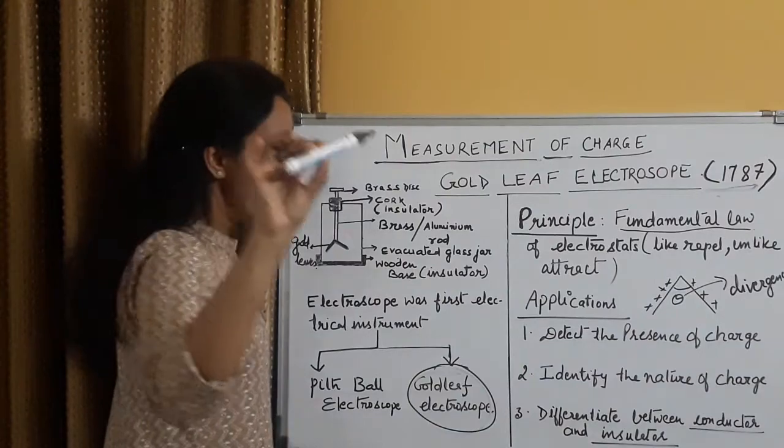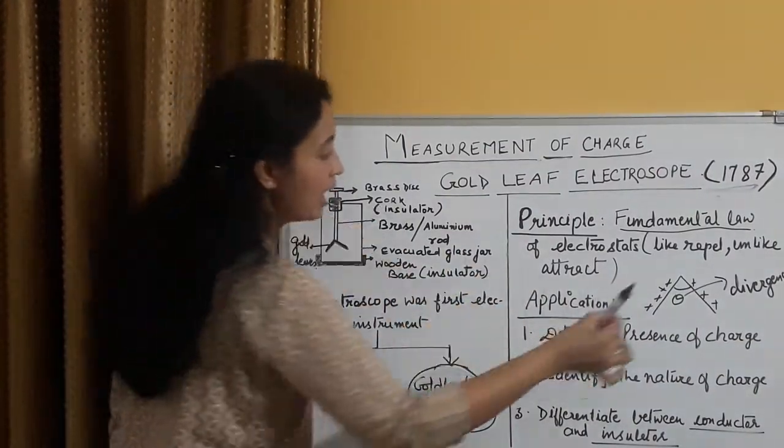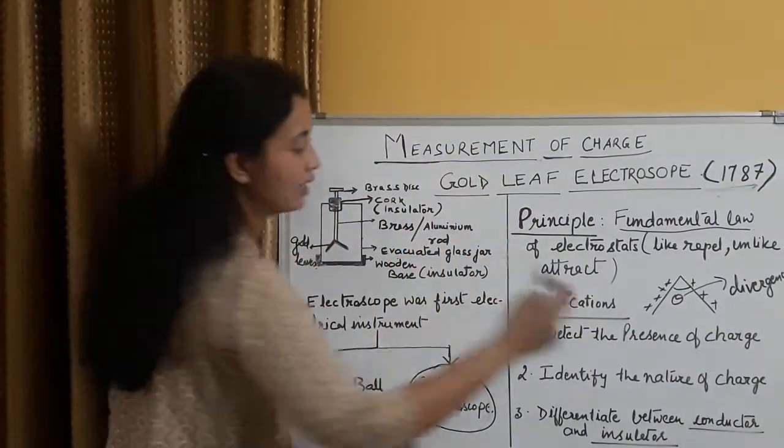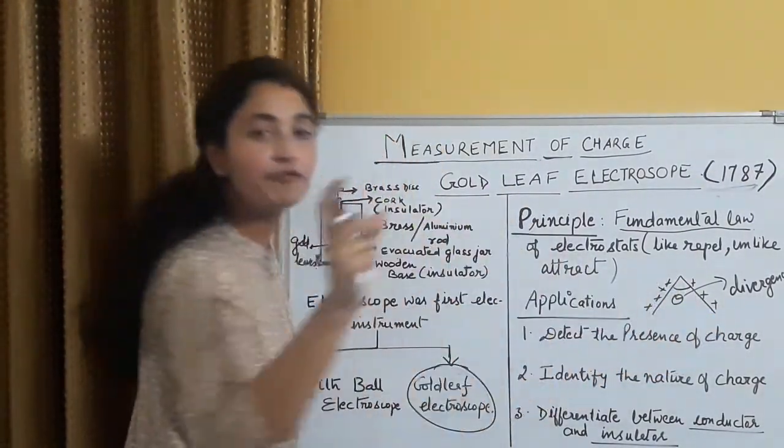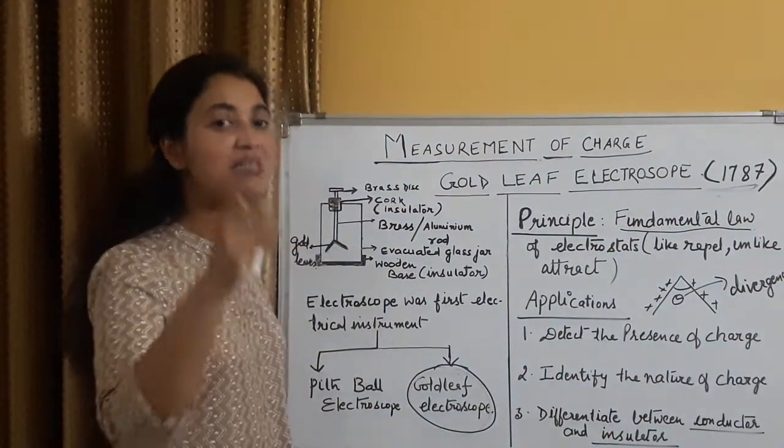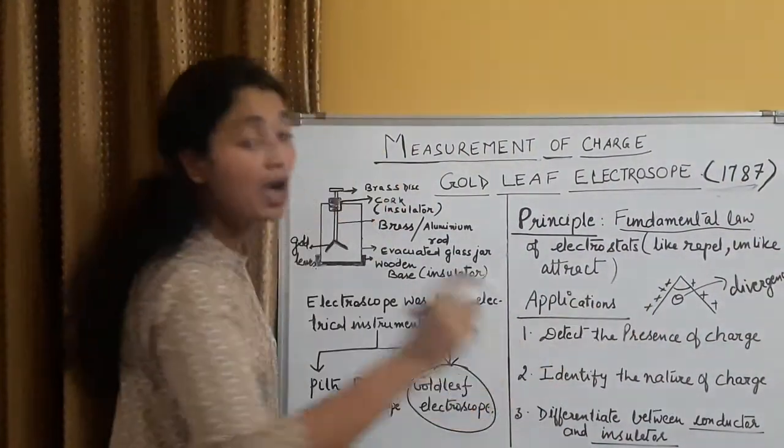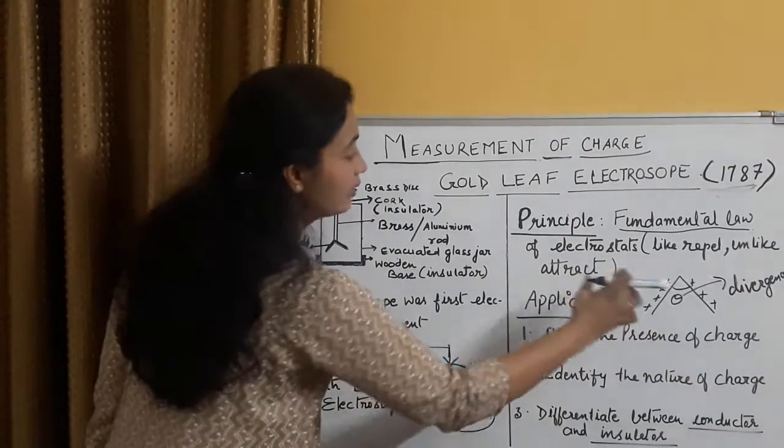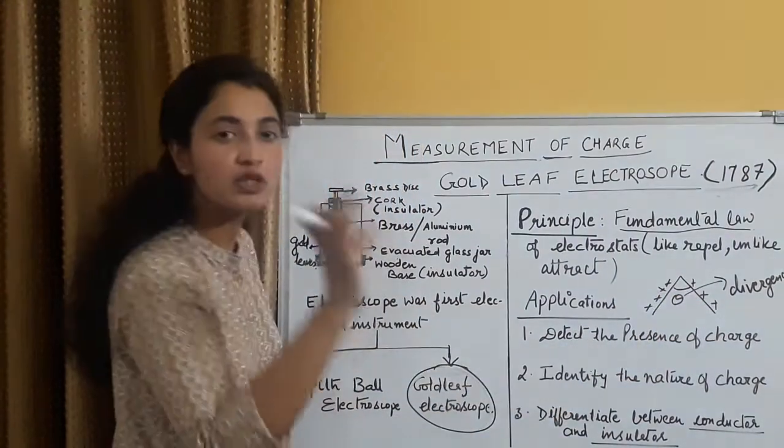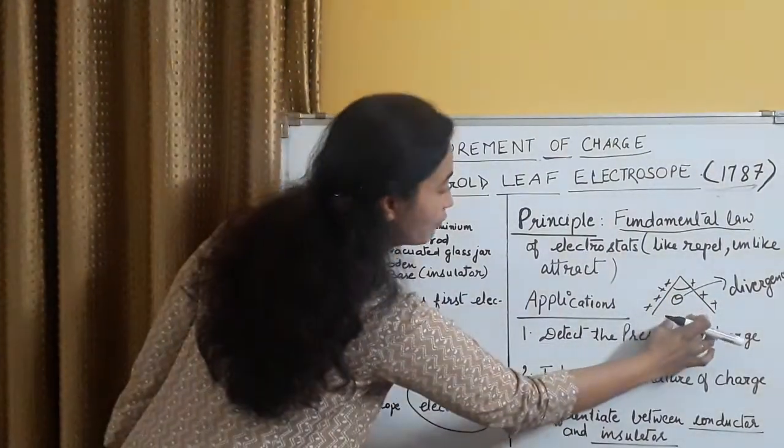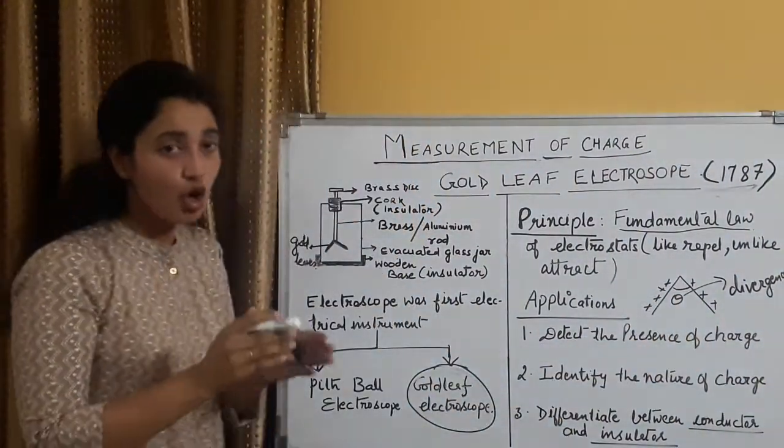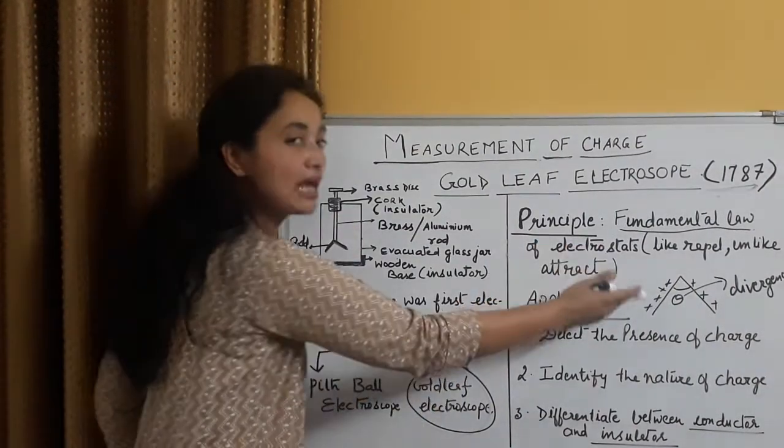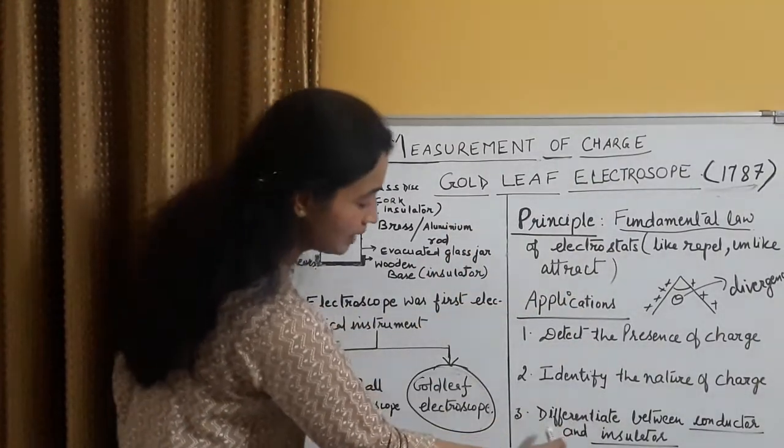Suppose, mera test rod hai, aur mujhe check karna hai ki, ispe positive hai, ya negative. Agar maine isko touch kiya, aur agar yeh rod positive hai, toh yeh divergence badhega. If divergence increases, that means the nature of charge is same as that of gold leaf. Aur agar suppose, mera rod negative hai, if it is negatively charged, then that negative charge will neutralize these positive charges, wo neutralize karega, and degree of divergence will decrease. So, convergence batata hai ki, yeh oppositely charged hai, divergence batata hai ki, yeh same charge hai, jo aap ne already, electroscope ko diya hai.